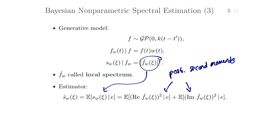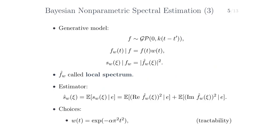Those posterior second moments just follow from the usual rules of conditioning GPs on observations, if we can compute the cross-correlation between f̂_w — the real part thereof and the imaginary part thereof — with the data, and if we can compute this kernel. This is the model introduced by Felipe Tobar in his paper, called Bayesian non-parametric spectral estimation, abbreviated BNSE. For tractability, we choose the window to be an exponential function. And the kernel of the GP over the underlying signal, we let it either be a spectral mixture kernel for flexibility, or in simple cases, just an EQ kernel. But we'll see later how other kernels can be used as well.